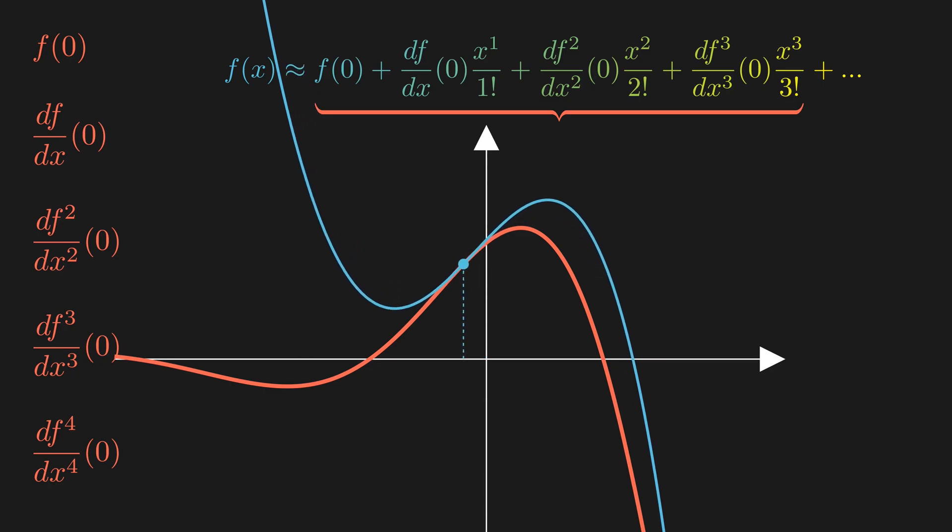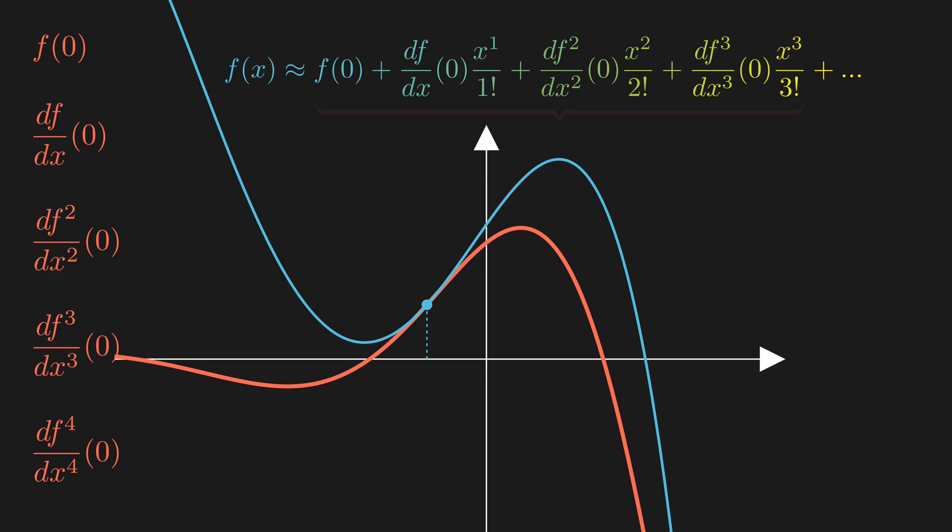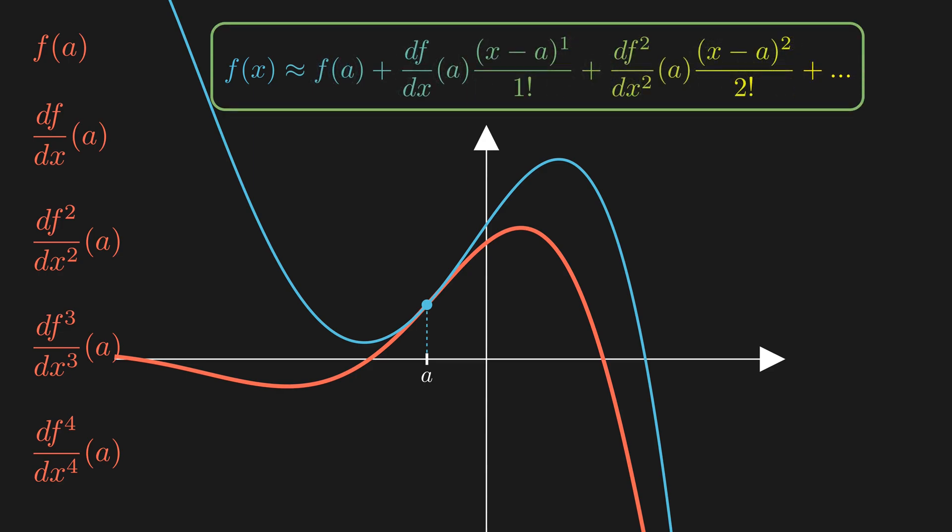Of course, you don't have to write the Taylor series around x equals 0. You can form a more general Taylor polynomial. Suppose you want the polynomial to approximate the function around a different point. Let's call that point A. First, compute the derivatives of the function at x equals A up to the degree you want. Then, write the Taylor series in powers of x minus A. That's the most general form of the Taylor series.